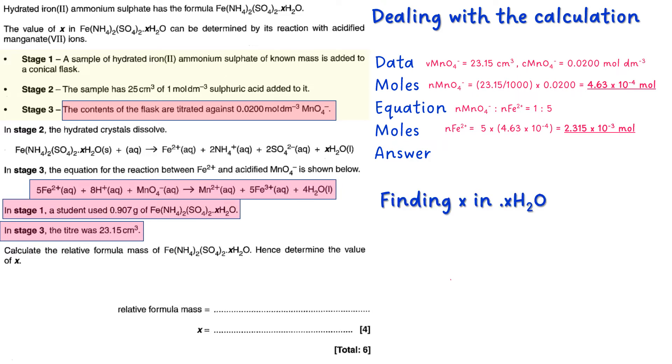So the answer involves finding x in xH2O. So I'll tell you now how to do that. If you take the equation or the formula for the hydrated salt, and you just look at the anhydrous version, you can work out the molar mass of the anhydrous version by adding everything up.